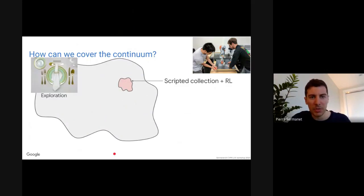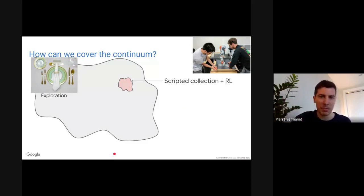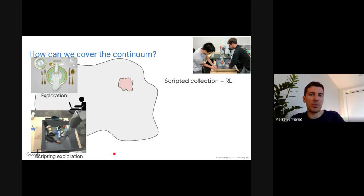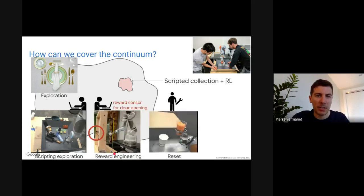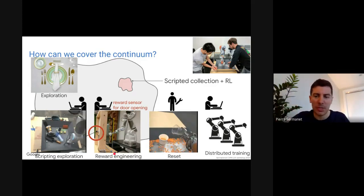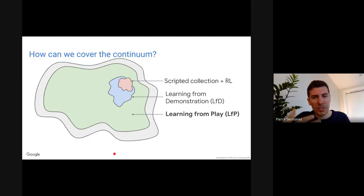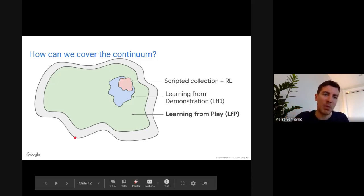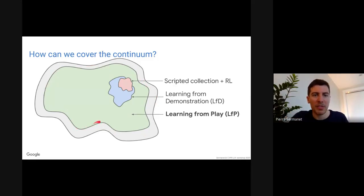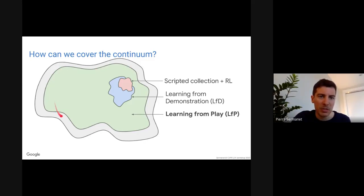How do we cover the continuum? Scripted collection with RL requires defining a reward and resetting — it doesn't scale well. Learning from demonstrations requires pre-defining tasks — also not scalable. Instead, we propose learning from play. Play naturally covers a really broad set of behaviors because it's just broad exploration of space. Without pre-defining tasks, it gives you this continuum of skills. That's the right way to scale up.